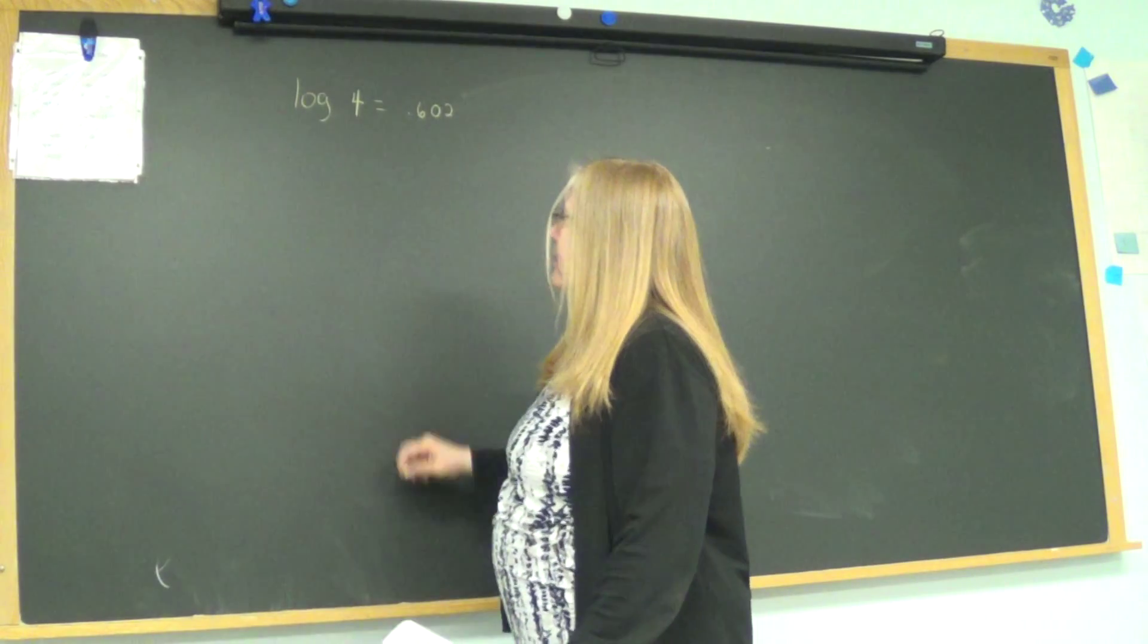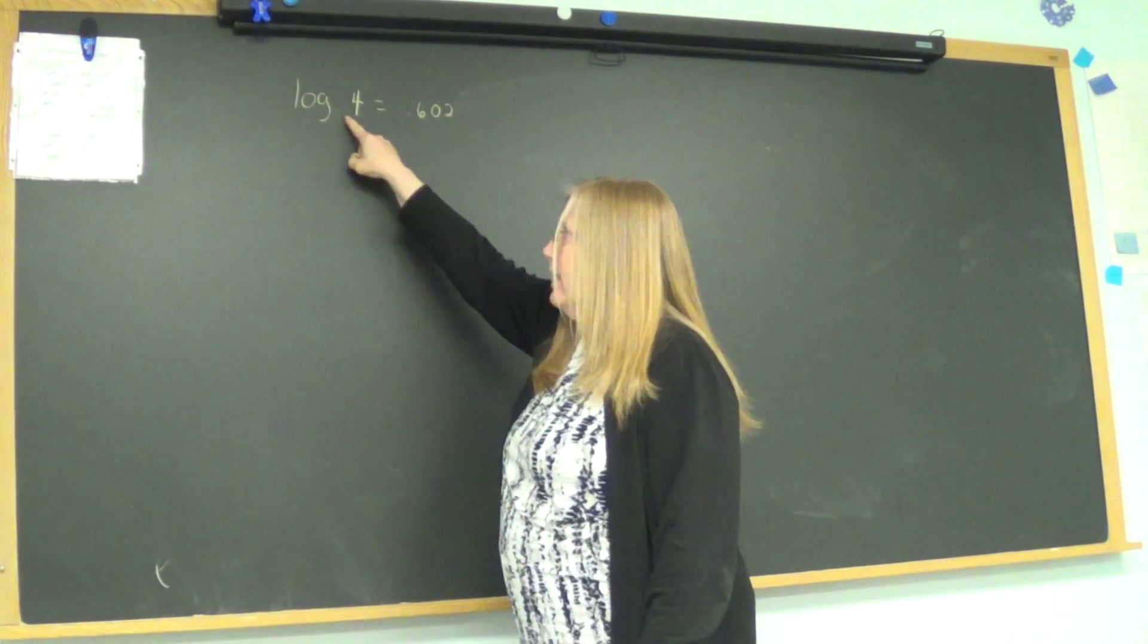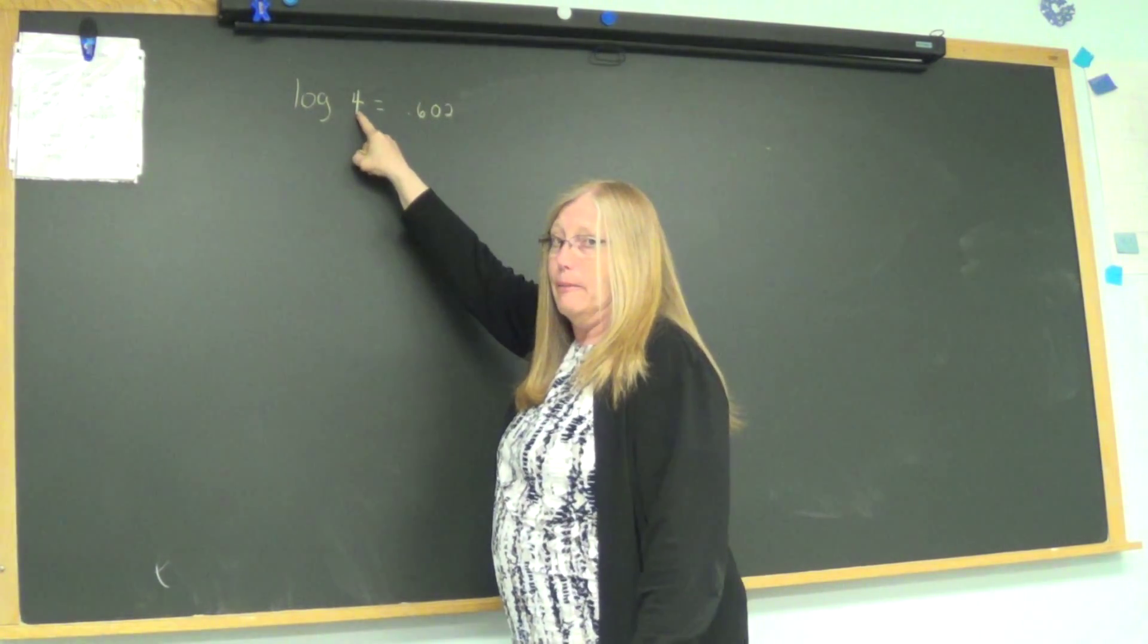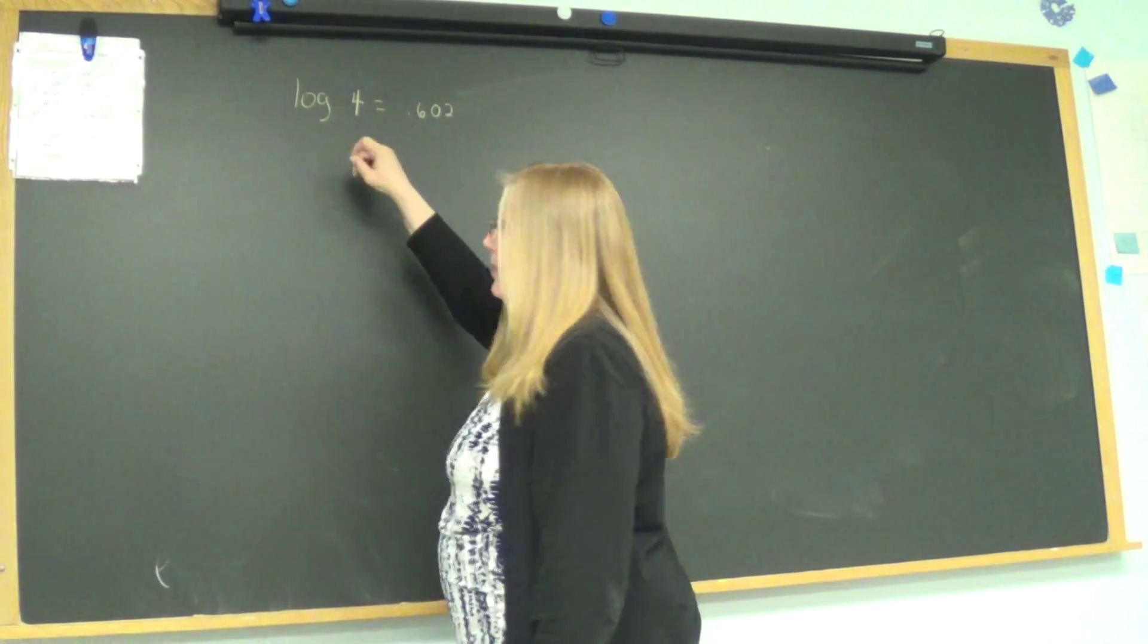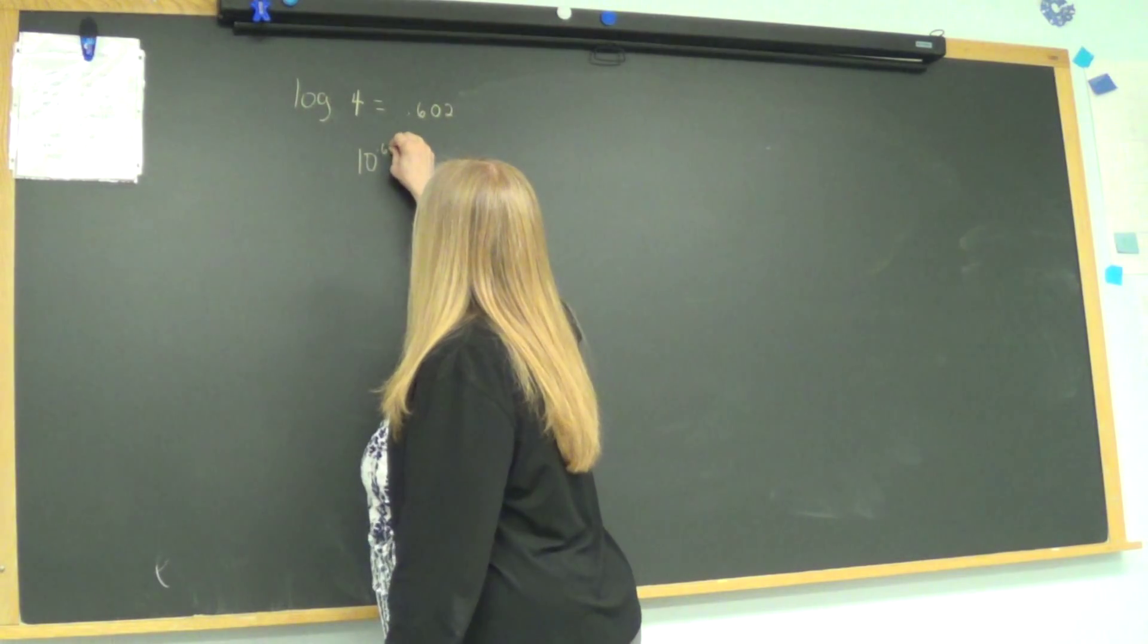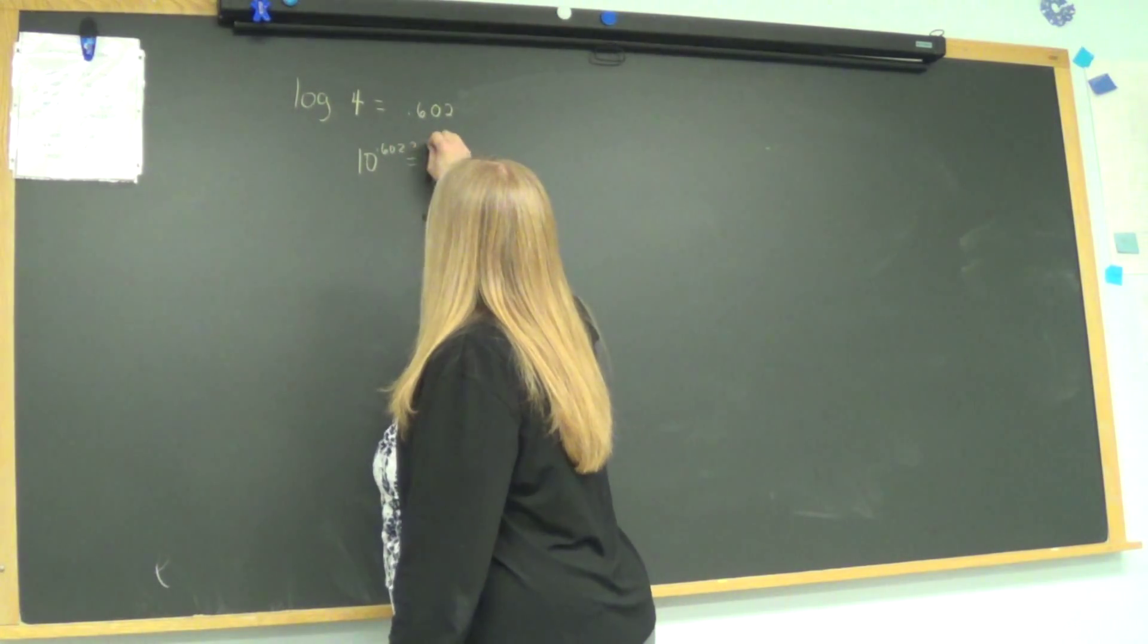So does that make sense? Is that the exponent I get this number to get this number? Let's try it. 10, the unwritten log base is 10, raised to the 0.602. Does it equal 4?